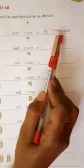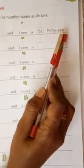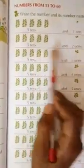And its number names are as follows. 5 tens and 1 one is 51. F-I-F-T-Y O-N-E, 51. 5 tens and 2 ones is 52. Same way you write 53, 54, 55, 56, 57, 58, 59, 60. Understood, children?